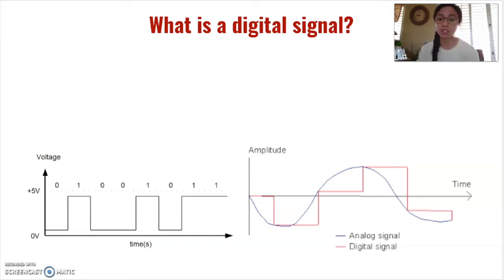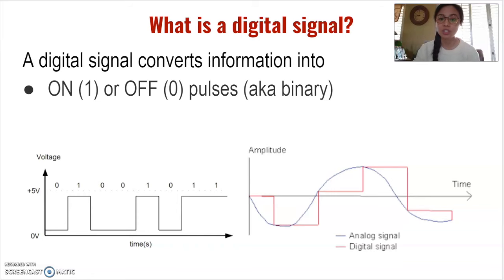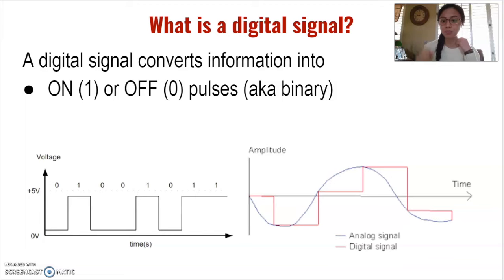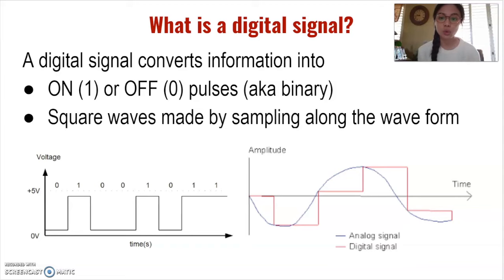On the other hand, a digital signal converts information into discrete values. They have a finite set of possible values that the signal can be converted into. In other words, digital signals exist as on or off pulses. On pulses are often represented as the number one, and off pulses are often represented by the number zero. This is known as binary — bi meaning two — which refers to the two values the signal can exist as: one or zero. In a square wave, these values are either up or down. Up means on and down means off — up is one, down is zero.